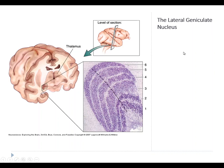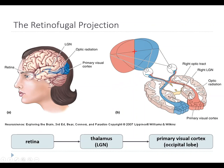Now let's talk about the lateral geniculate nucleus. This is the part of the thalamus that gets input directly from the retina. The axons that come out of the retina are the retinal ganglion cell axons. They form the optic nerve and then hit the optic chiasm. If they're from the temporal side they stay on that side of the brain; if they're from the nasal retina they cross to the opposite side. Regardless, they project to this tiny region called the lateral geniculate nucleus, which is part of the thalamus.